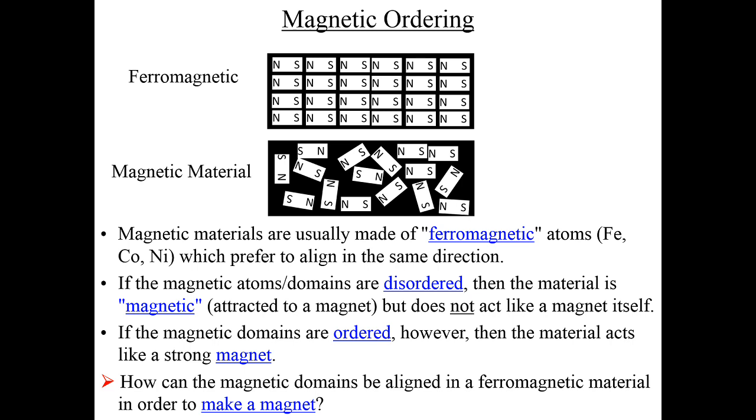However, the local magnetic moments are not always aligned. So below that, we see what we call a magnetic material. That means that there are bits of material that are like a magnet, but they are disordered and they are pointing in all different directions.